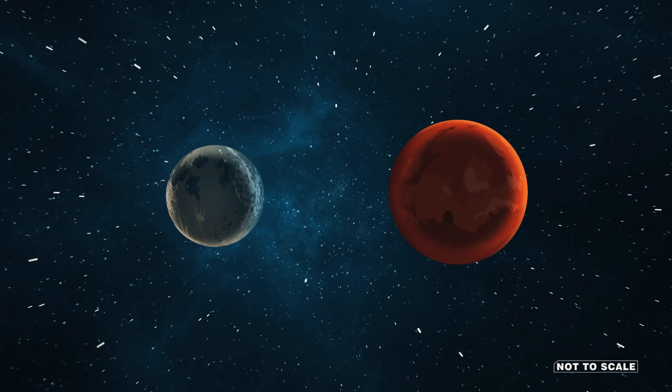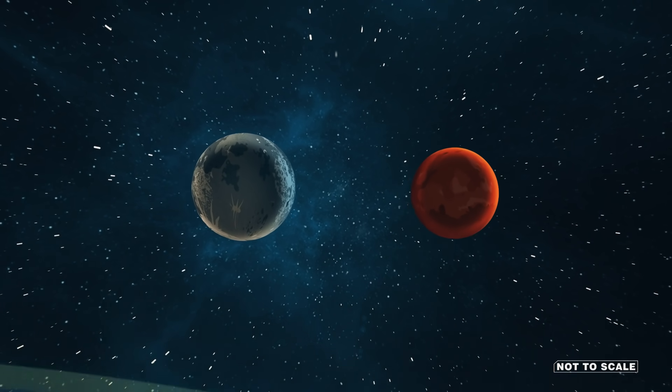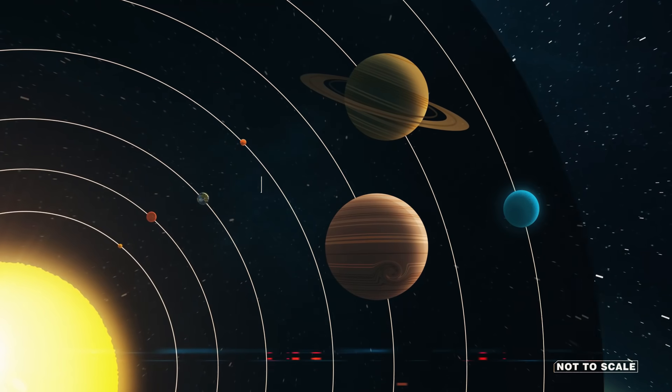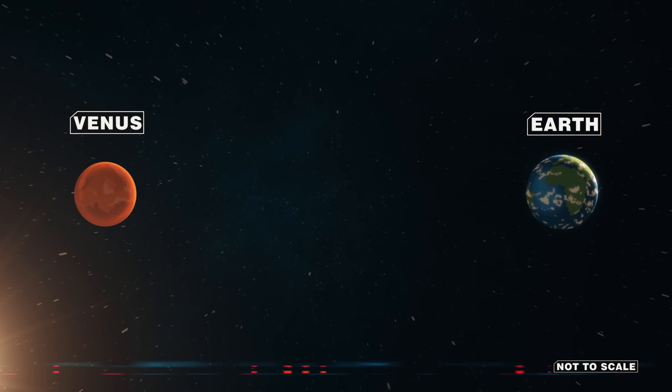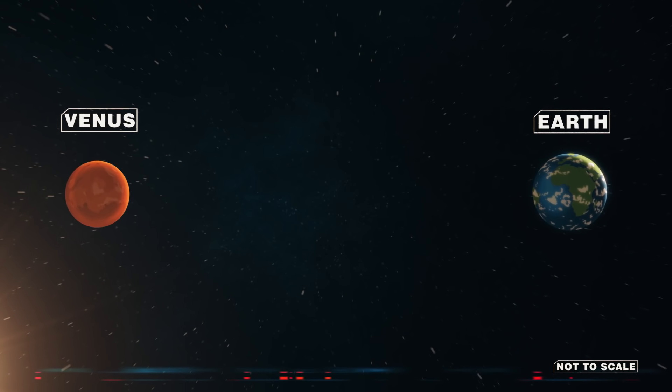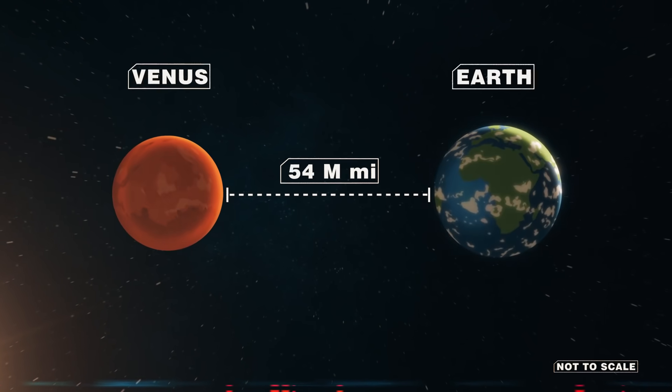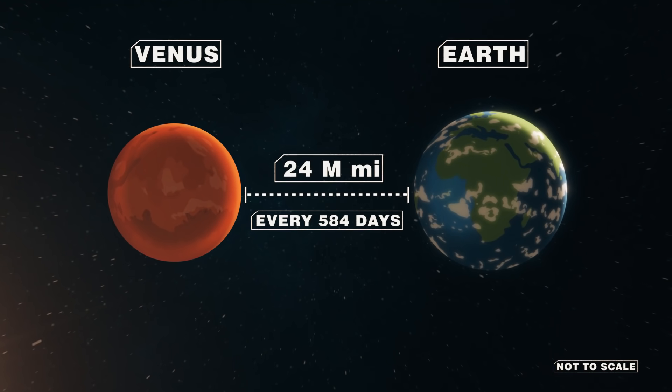The moon has one major advantage over every planet in our galaxy. It's only a short space flight away from Earth. Of the seven non-Earth planets in our solar system, Venus is the closest. The distance between Earth and Venus ranges from 162 million miles to 24 million miles, but the latter only happens once every 584 days.